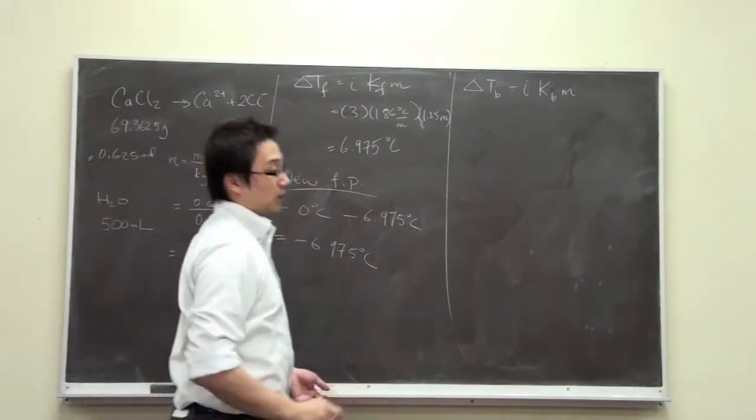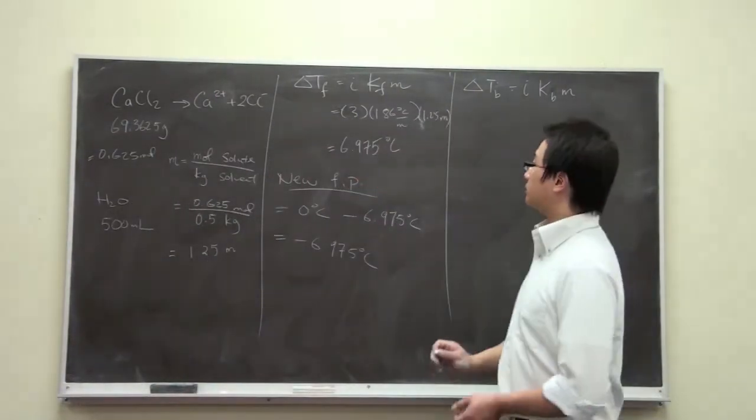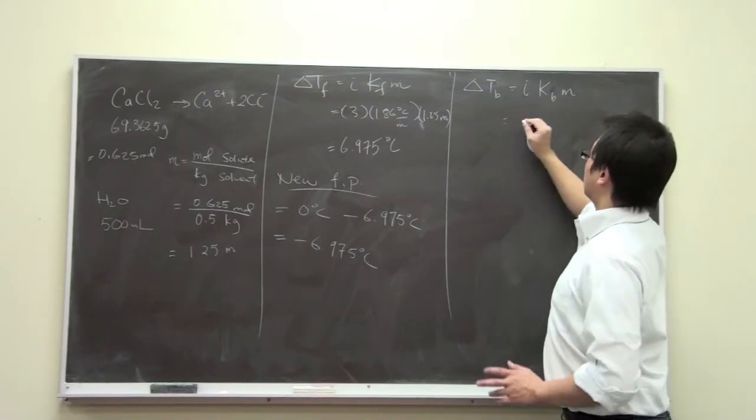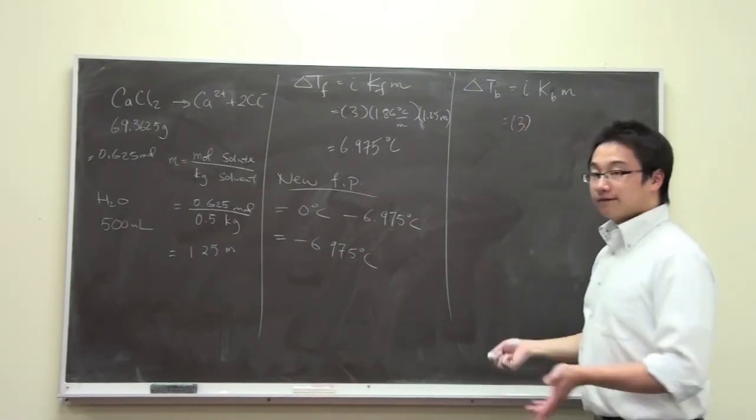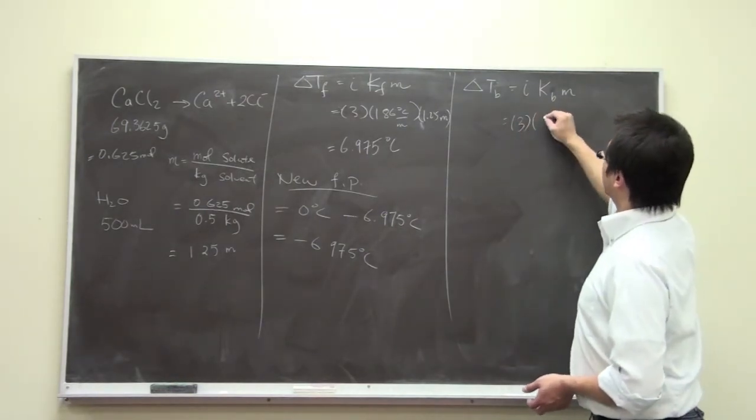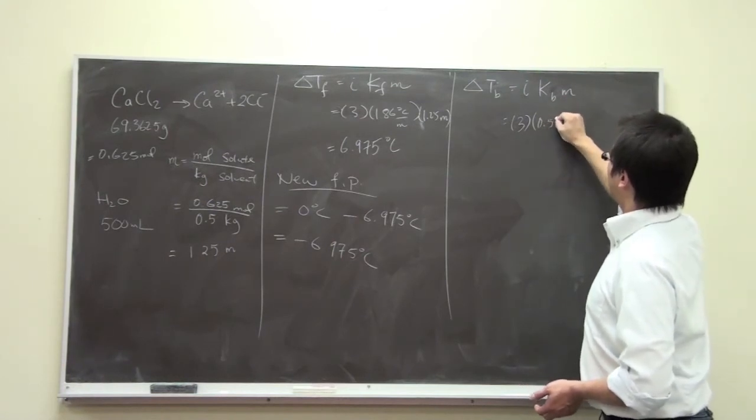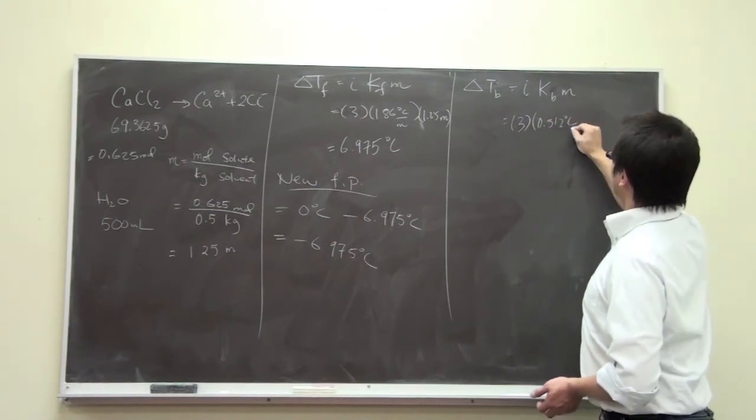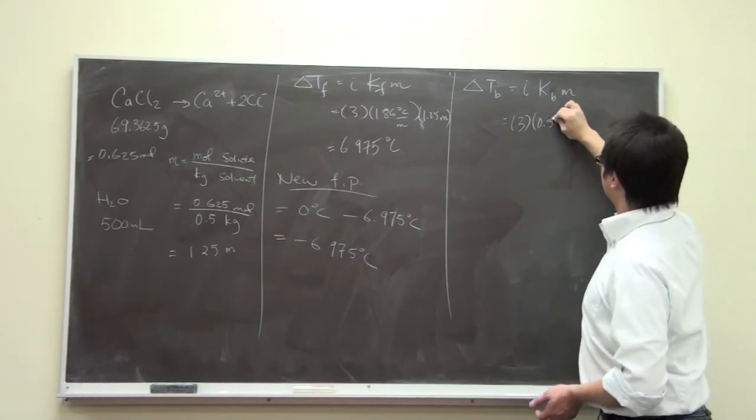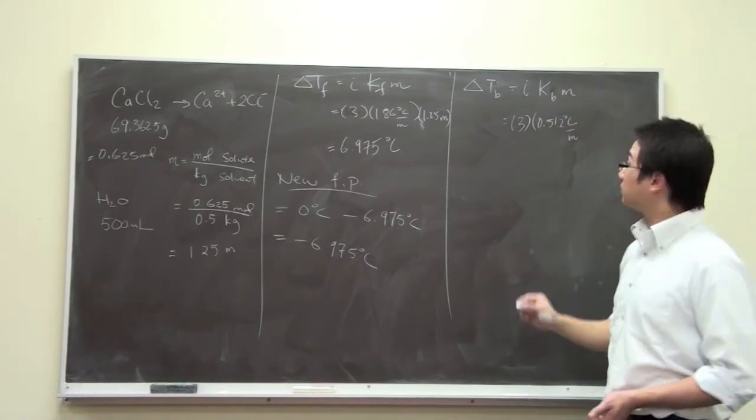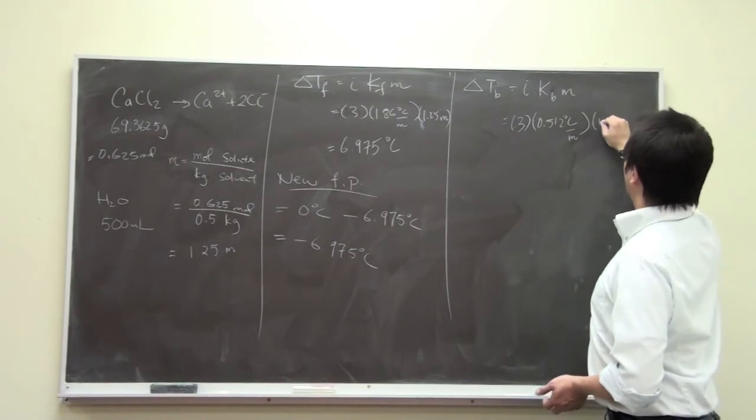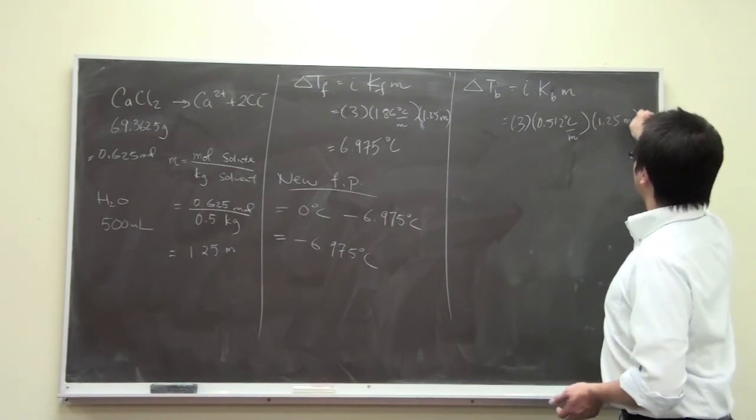And then we can look at the boiling point elevation. It's very similar. The van't Hoff factor is 3. The boiling point elevation constant is 0.512 degrees Celsius per molal. And then molality is 1.25 molal.